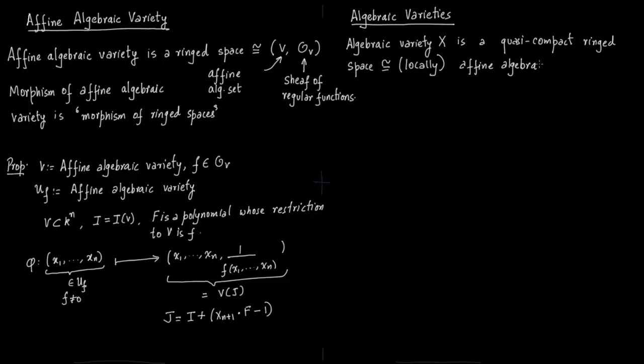So now we are at a higher space X. X has a large number of components and each of these components, there are finitely many components of which X is made of, and each of these components are isomorphic to an affine algebraic variety. So basically you have an algebraic set and you have a sheaf of regular functions on it. And same as before, morphism here is nothing but morphism of ringed spaces.